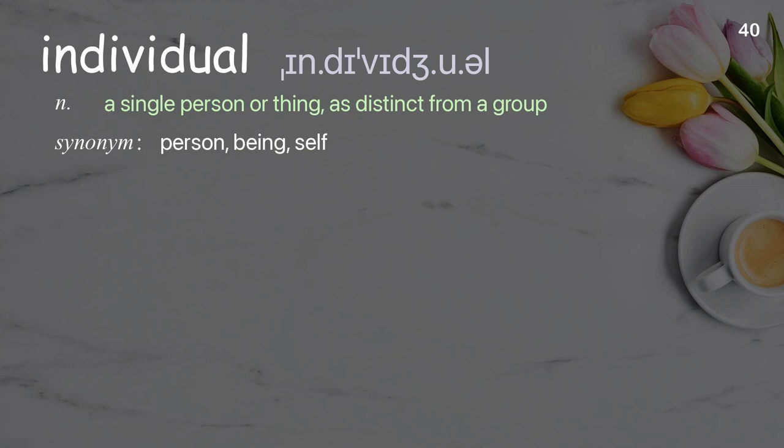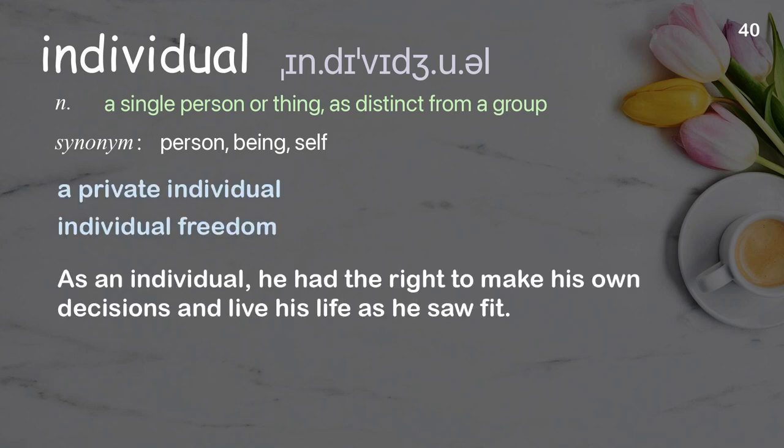Individual: A single person or thing, as distinct from a group. Examples: A private individual, individual freedom. As an individual, he had the right to make his own decisions and live his life as he saw fit.